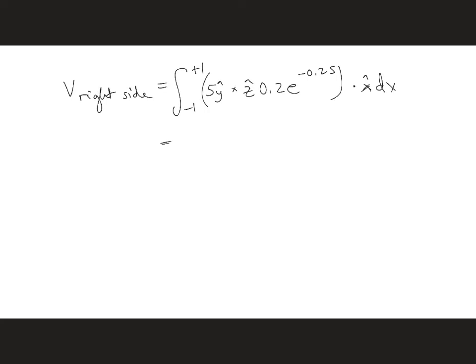Simplifying, we get 1X hat e^(-0.25) dotted with X hat dX, which gives us Xe^(-0.25) evaluated from minus 1 to positive 1. We end up with 1.558 volts.